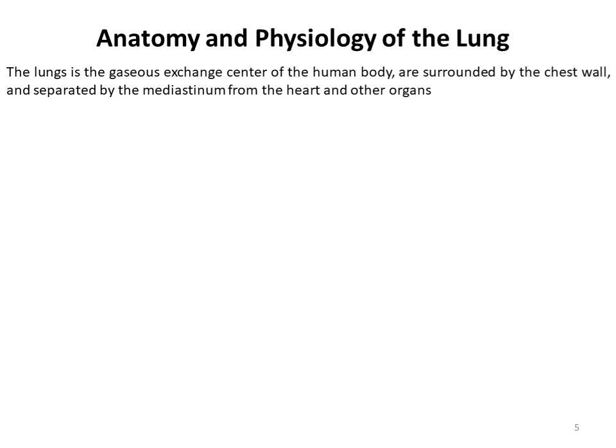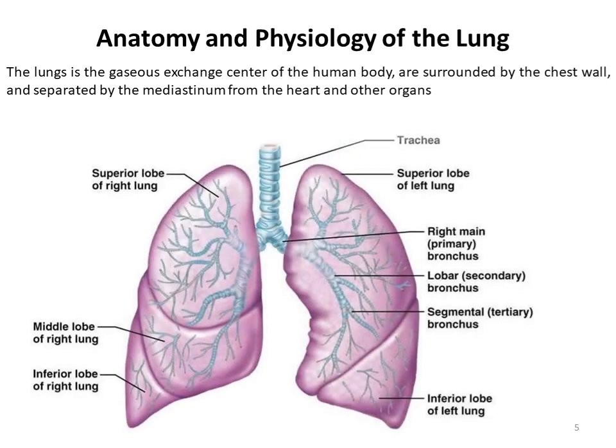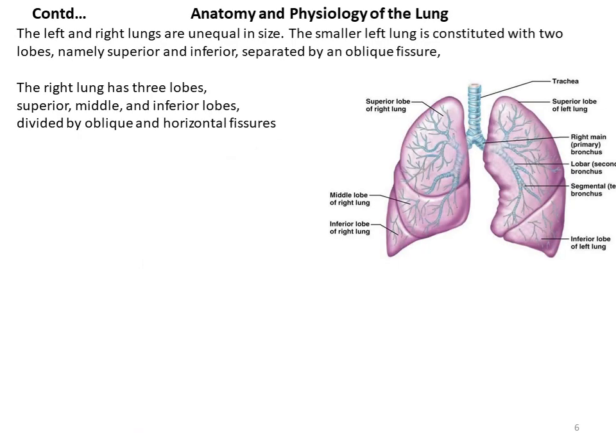Now, the anatomy and physiology of the lung. The lung is the gaseous exchange center of the human body, surrounded by the chest wall and separated by the mediastinum from the heart and other organs. Looking at the picture of the lungs, the left lung and right lung are of unequal size. The smaller left lung is constituted with two lobes — superior and inferior lobes — separated by an oblique fissure. The right lung has three lobes: superior, middle and inferior, divided by an oblique fissure and a horizontal fissure.